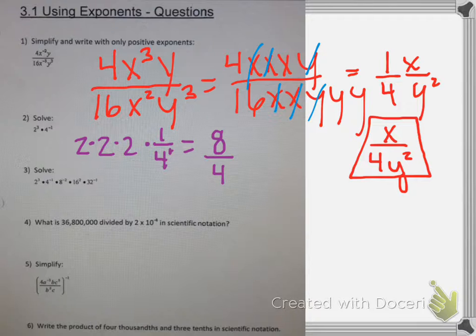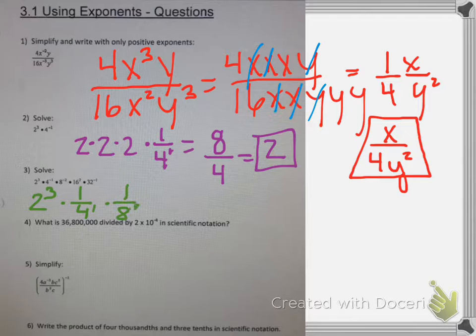Number 3 has multiplication with a bunch of negative exponents. So let's write those negative exponents as positive exponents by moving them to the denominator. I get 2 cubed times 1 over 4 times 1 over 8 squared times 16 squared times 1 over 32.